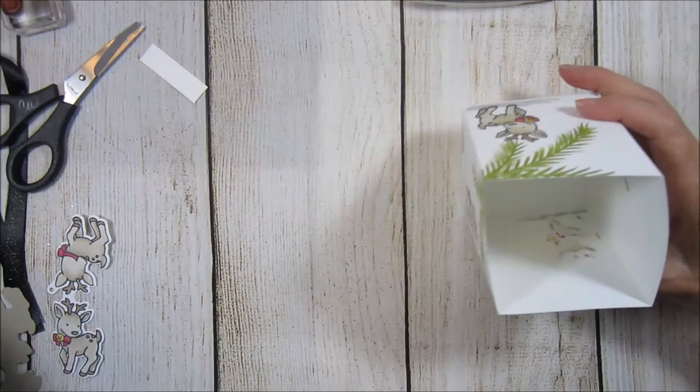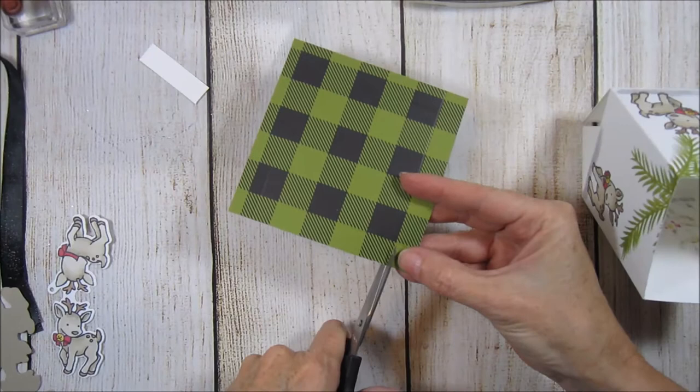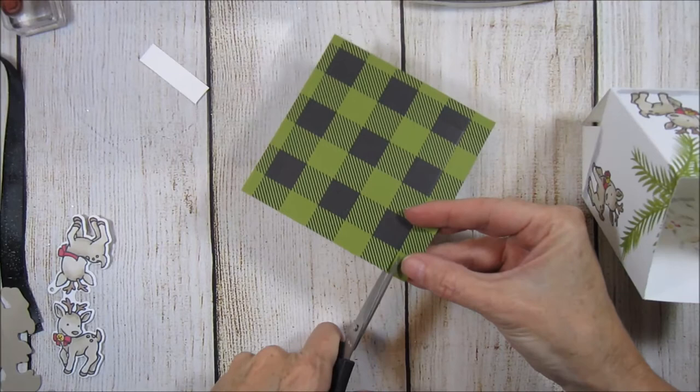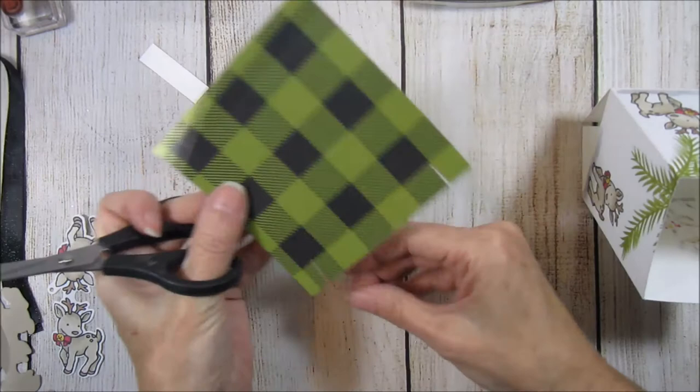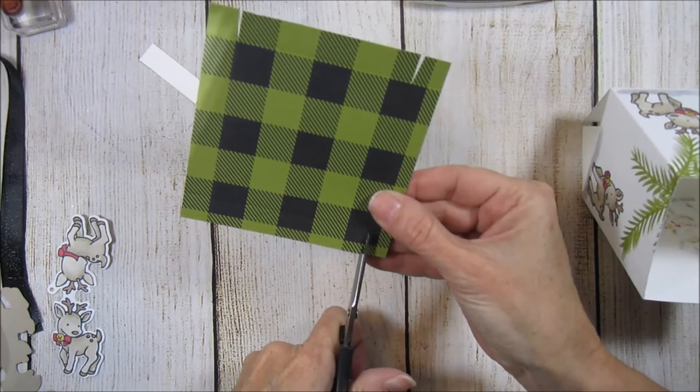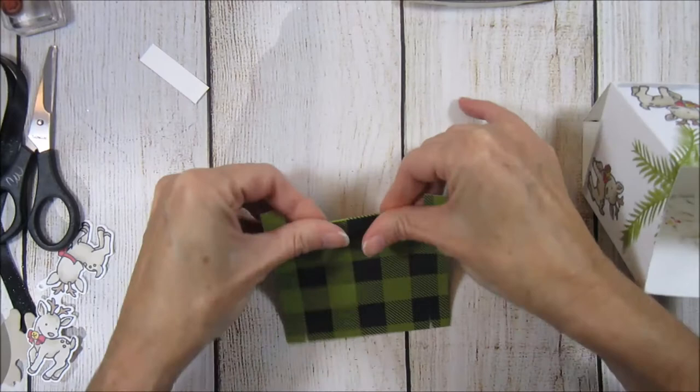Then for this one here I'm going to go ahead and cut along the score line here, and then on this outside tab one I'm going to cut a little V out of it so you get that little cutout. And I'll do that on this side and then flip it around and do the same over on this side. And then fold along each of these score lines.